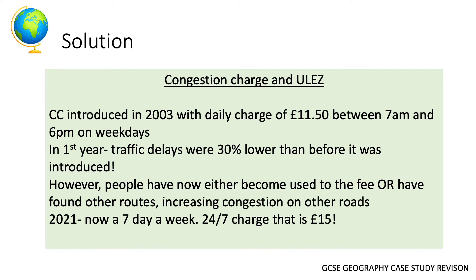Looking at solutions, we're going to focus on transport and how London has tried to cope with congestion — linking to the 5.2b sustainability section. In 2003, the congestion charge was introduced with a daily charge of £11.50 between 7am and 6pm on weekdays, targeting rush-hour commuters driving by car. In the first year up to 2004, traffic delays were 30% lower because there were fewer cars on the road.